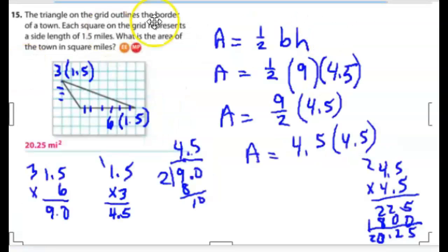Alright, so for number 15, we have the triangle on the grid outlines the border of a town. Each square on the grid represents a side length of one and five-tenths. This is the step that a lot of us didn't do in order to get this correct, so these are more than one step. Find the area. So again, I write the area. Area is equal to one-half base times height. And I come over here, and I don't know what base and height are because I have to do a conversion.